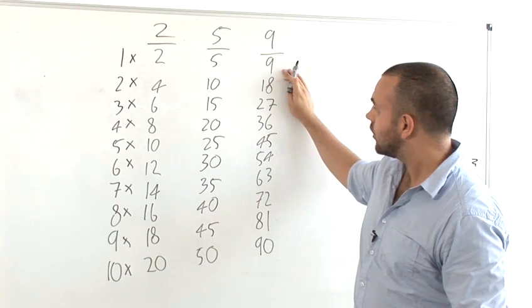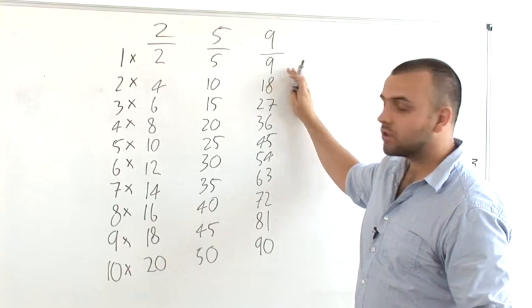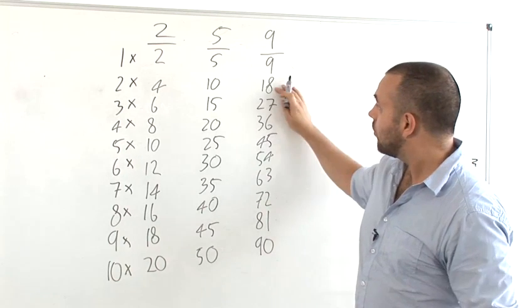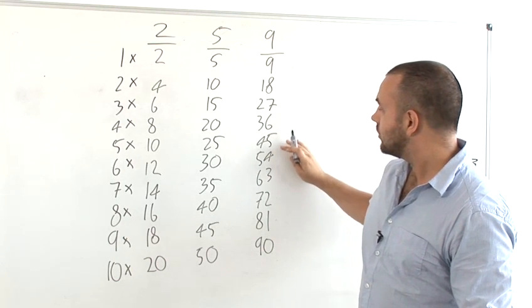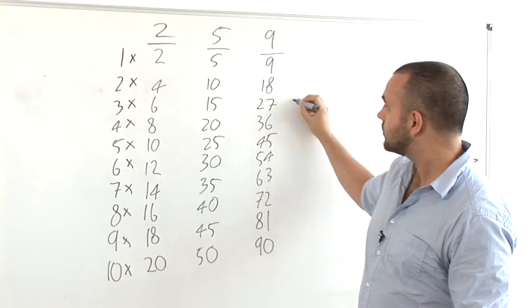And finally, the nine times table, which a lot of people have problems with, but there are two things to bear in mind with it. One, any number in the nine times table, the two digits will always add up to nine.